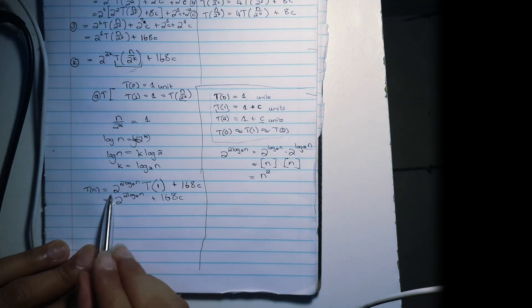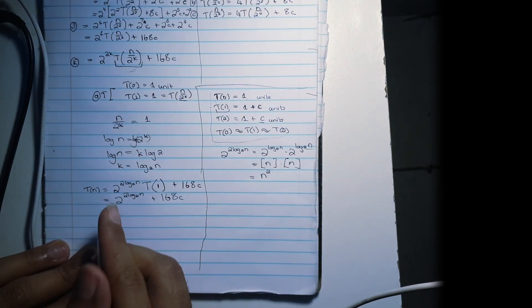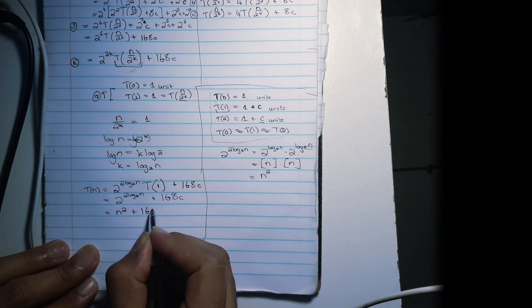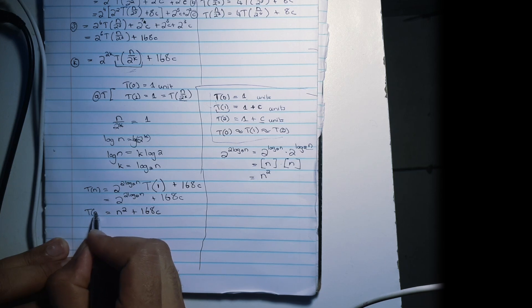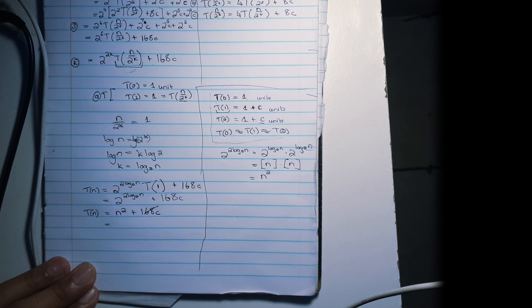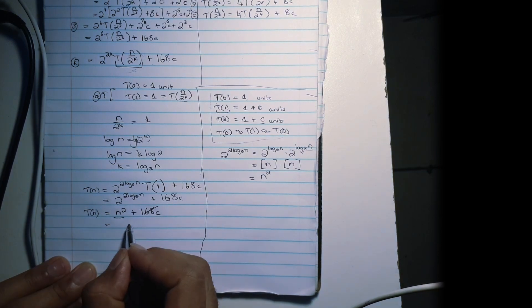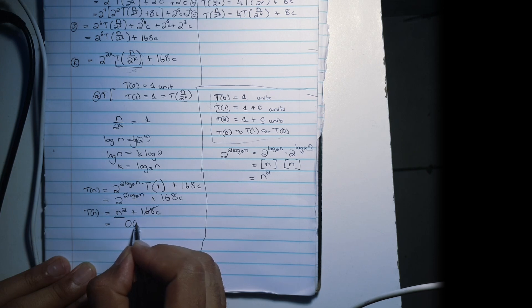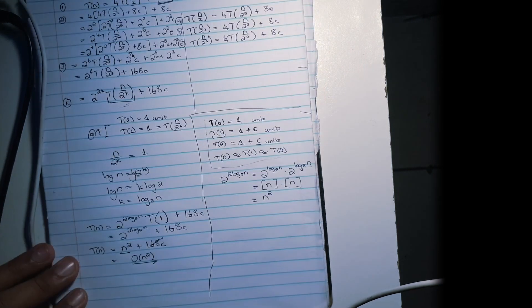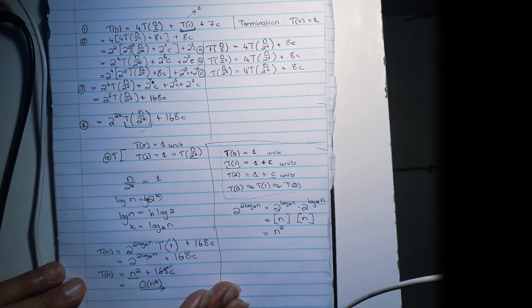So we substitute this value back: we have N squared plus 168C. Ignoring all constants, we're left with N squared, meaning this problem gives us a time complexity of big O of N squared. This is the whole entire process. If you found value in this, be sure to click the like button, subscribe, and share this with your fellow computer science students.